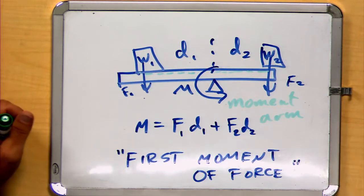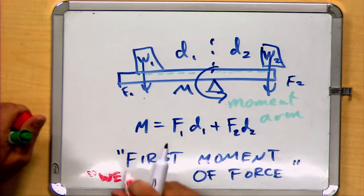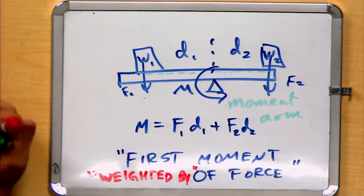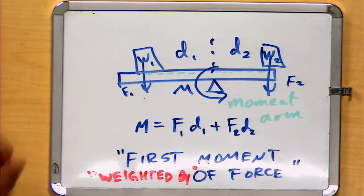Sometimes this is also called weighted by. In other words, our moment weighted by the force, referring to sort of our initial concept of applying this to weights on a seesaw.